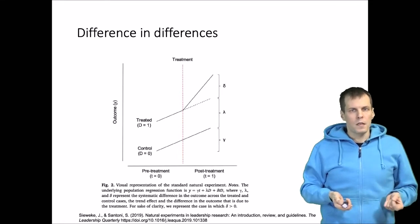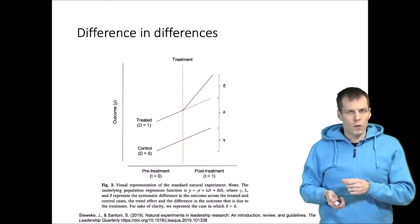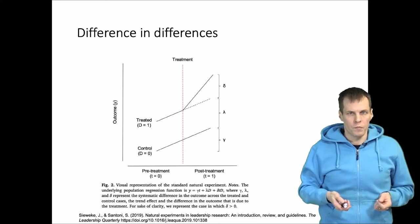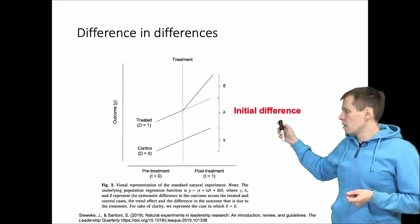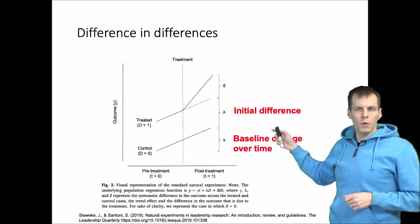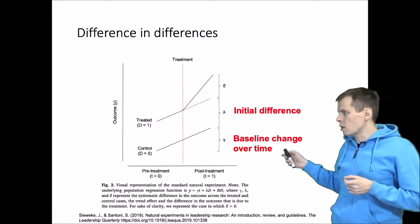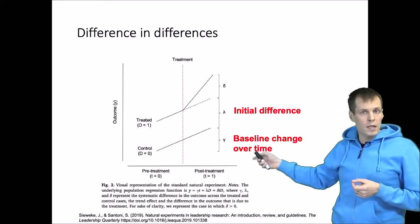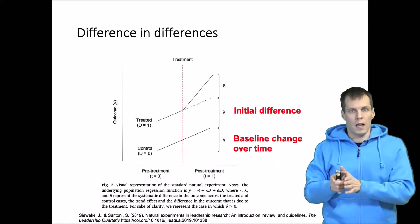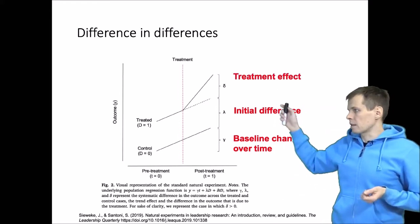If the difference between treatment and control decreases or becomes more negative after the treatment, the causal effect is negative. We have lambda — the initial difference, which is the first difference. Then we have baseline change over time, which is not our primary interest but prevents us from simply comparing the treatment group against itself. And then we have the treatment effect delta.